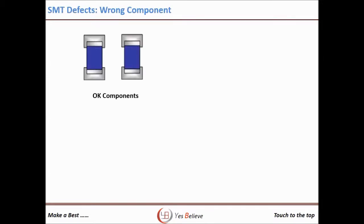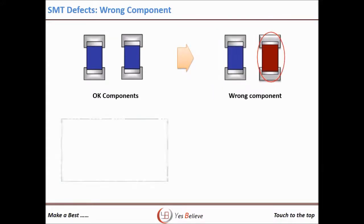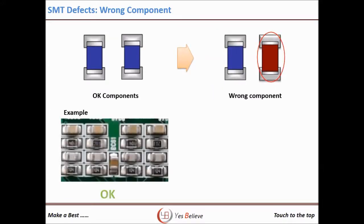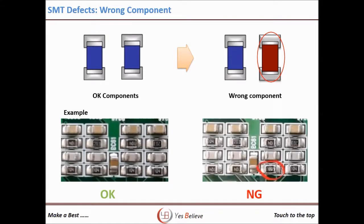Wrong component is the most serious defect in SMT — if not found, the total production can be wrong. Here the wrong type or wrong value of component is mounted. This occurs due to a mistake in the program or wrong spool selection by the operator. It can also occur when there is a missing component and the operator mounts it manually before reflow, increasing the chance of wrong component placement.